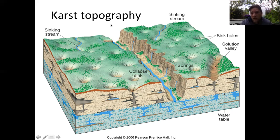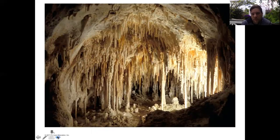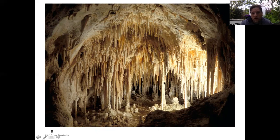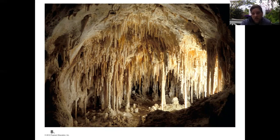Karst areas have unusual features: streams that suddenly disappear underground, small canyons eroded quickly by river systems, and interesting caves. Inside caves you find stalactites hanging from the top and stalagmites rising from the bottom, sometimes forming pillars. As water percolates down from rain it dissolves limestone, and once it hits the air inside the cavern it precipitates out, creating those unique structures. Both the limestone and the cave structures are made of calcium carbonate.